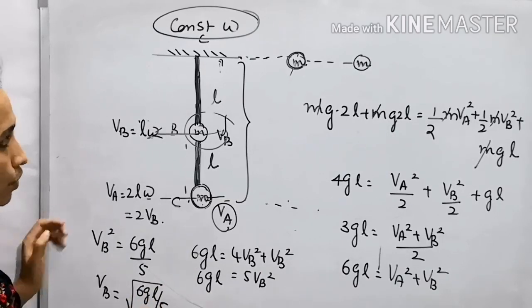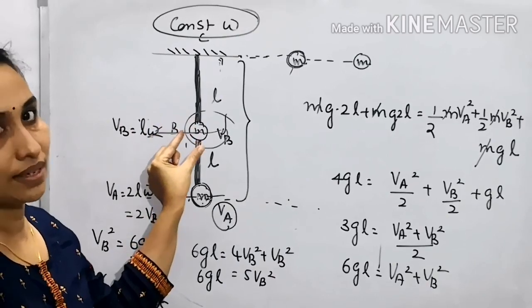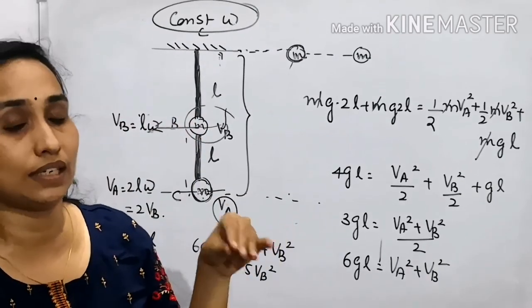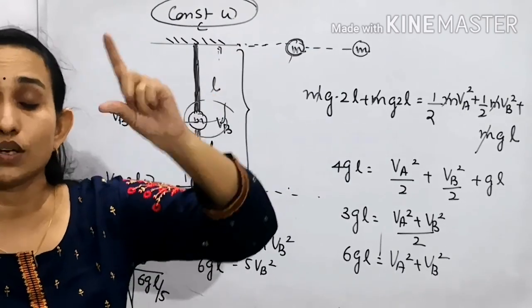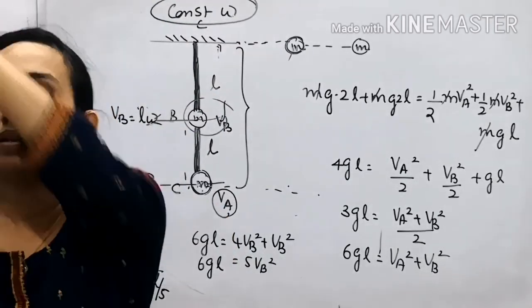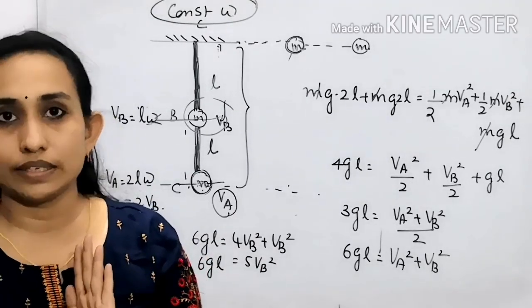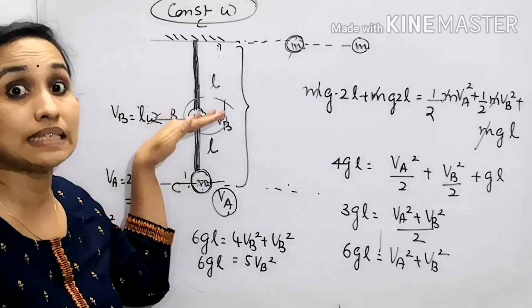Please remember, whenever you have more than one mass, consider the potential energy and kinetic energy for each mass. We are applying that the total mechanical energy of the system is conserved. I hope it is clear. Thank you.